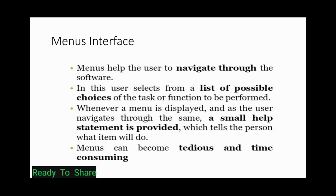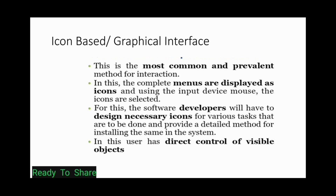Third is icon-based and graphical interface. This is the most common and prevalent method of interaction between humans and software. The complete menu is displayed graphically, and the user provides input through the mouse by selecting icons. Software developers designed different icons for different tasks to convey information to the user. At present, graphical interface is the most widely used.